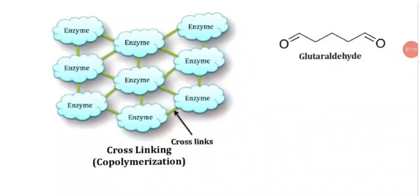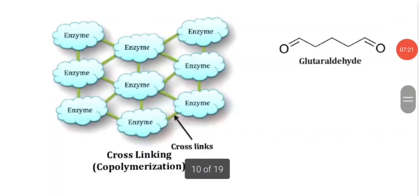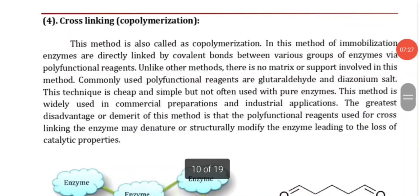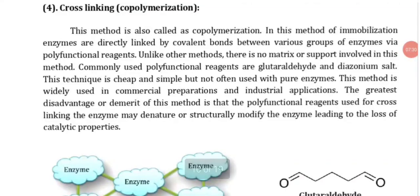Next is cross-linking or co-polymerization. The enzymes are cross-linked together. Unlike the other methods, there is no matrix or surface.